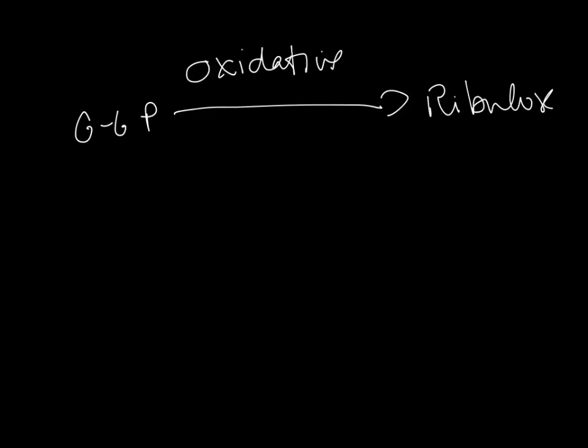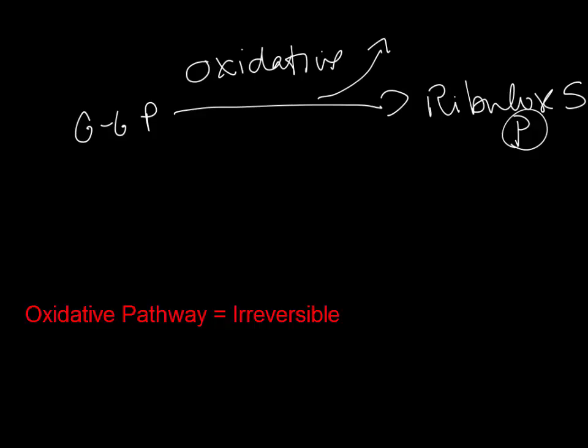There's an oxidative part of this pathway. The oxidative part goes from glucose 6-phosphate that we just made to ribulose 5-phosphate. This is an irreversible reaction. It generates NADPH. NADPH is necessary for synthesis of fatty acids, for glutathione reduction, and for other reactions as well.